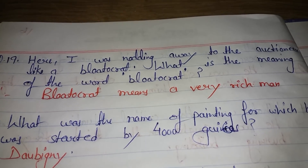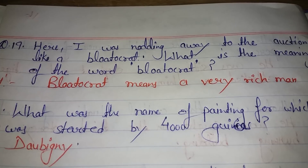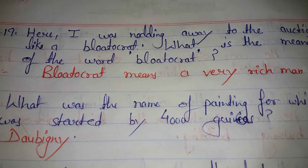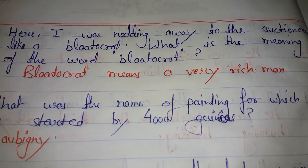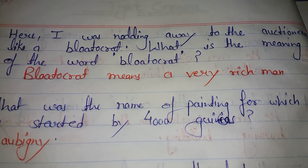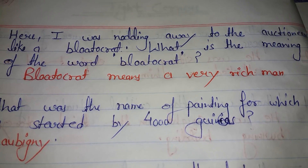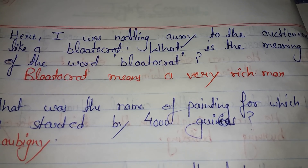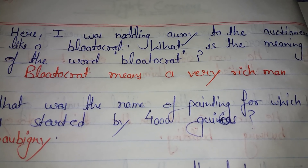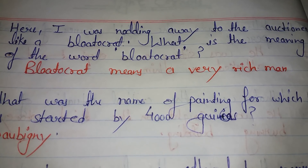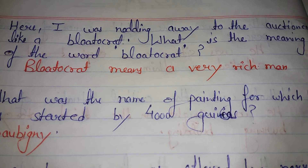'Here I was nodding away to the auctioneer like a plutocrat.' What is the meaning of the word 'plutocrat'? Plutocrat means a very rich man. The narrator was bidding just like a very rich man.